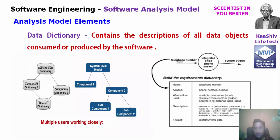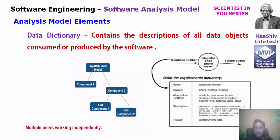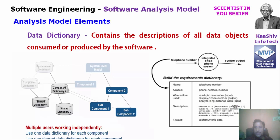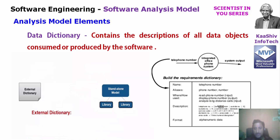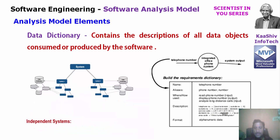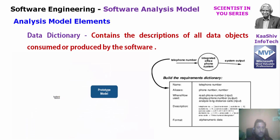For example, take telephone number. The name is telephone number. Its aliases include phone number and number. We call it reading the phone number, displaying the phone number — so input phone number, output phone number. For long distance, the description includes data types — the format is alphanumeric, described as STD code plus phone number. That is how your data dictionary works — it provides the details and description about the data.